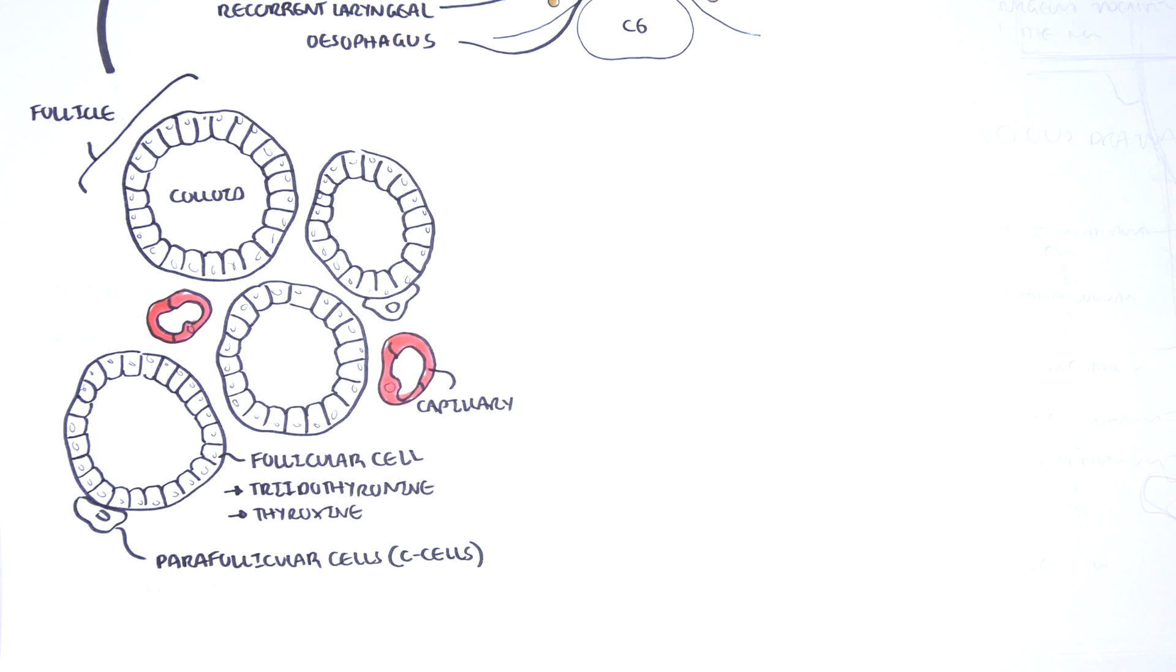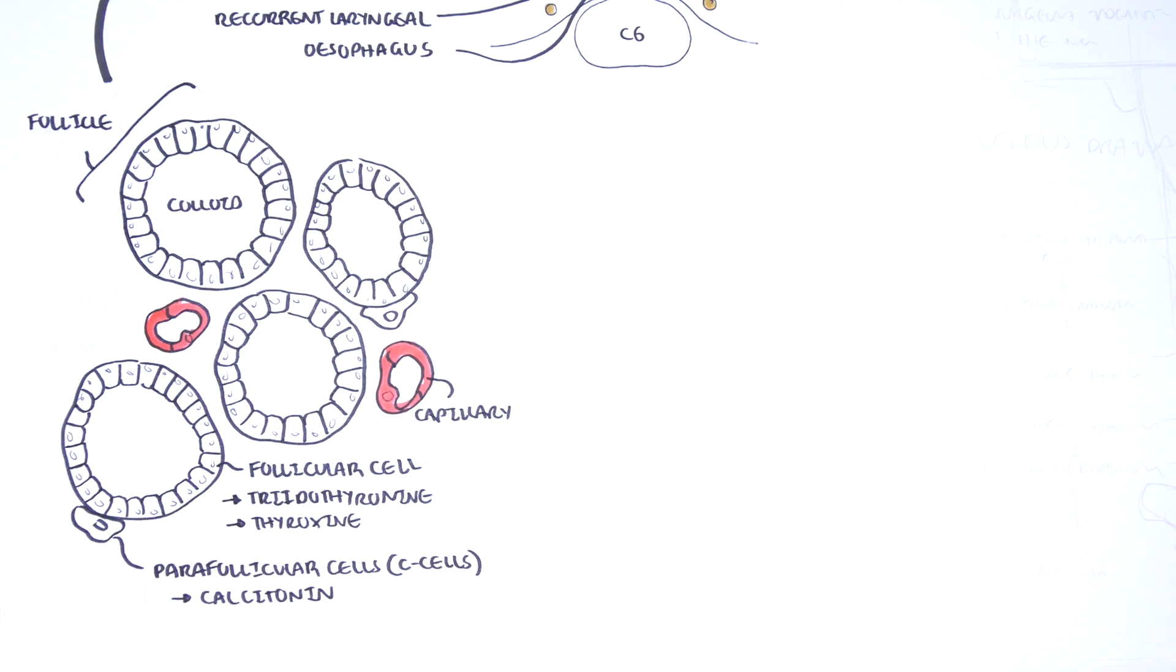Another cells called the parafollicular cells or the C cells are located between the follicles and produce the polypeptide hormone calcitonin which is important in calcium homeostasis.